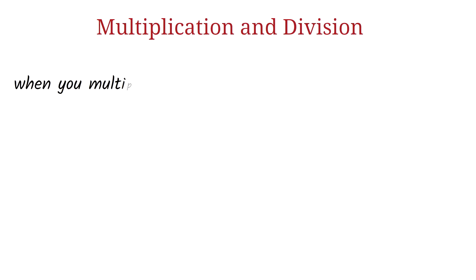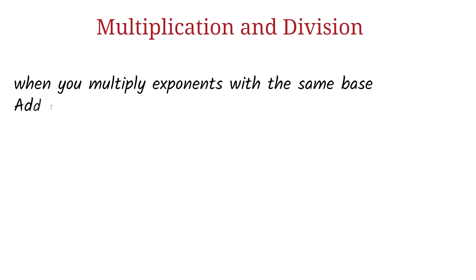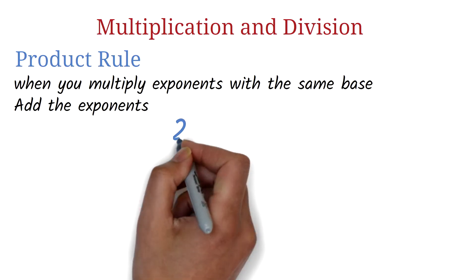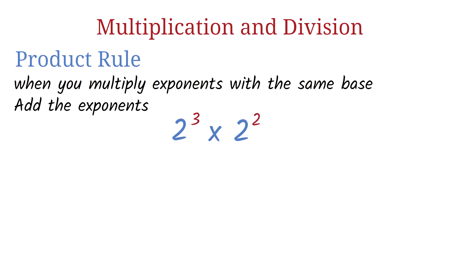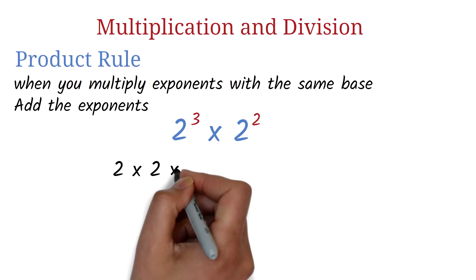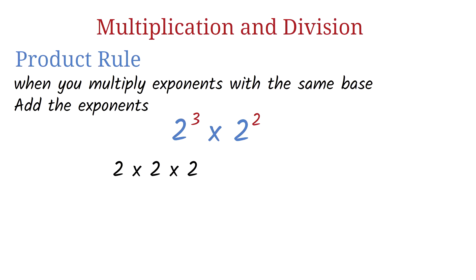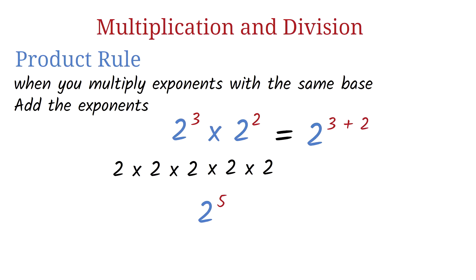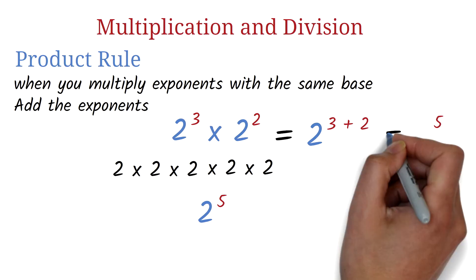Let's look at multiplication of exponents. When you multiply two exponential expressions with the same base, all you will do is add the exponents. This is known as the product rule. For 2 exponent 3 times 2 exponent 2: 2 exponent 3 is 2 times 2 times 2, times 2 exponent 2, which is 2 times 2. We now simply have five 2's multiplying, which is 2 exponent 5. So instead of that expanded step, we could have just added the exponents: 3 plus 2 equals 5, giving us 2 exponent 5.